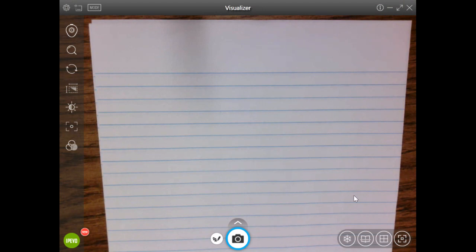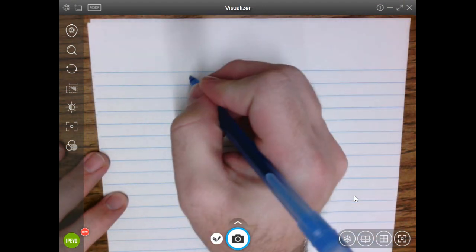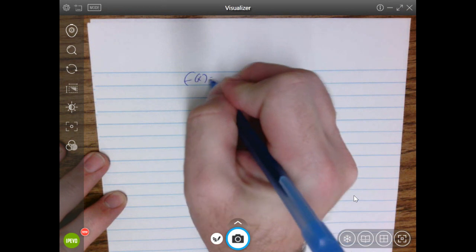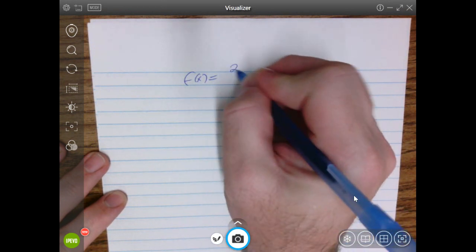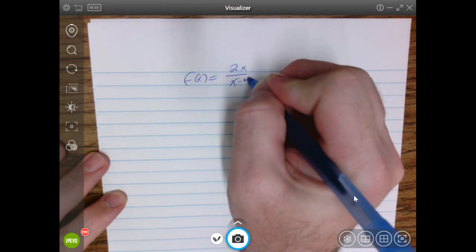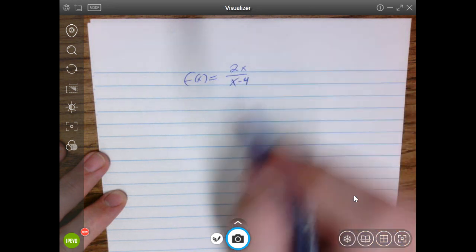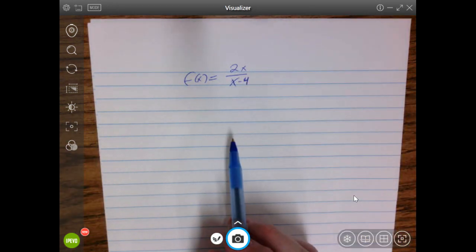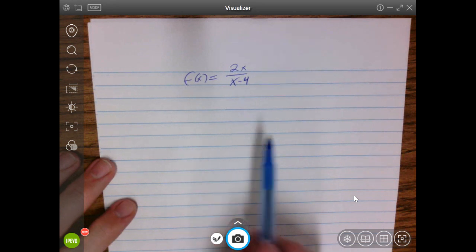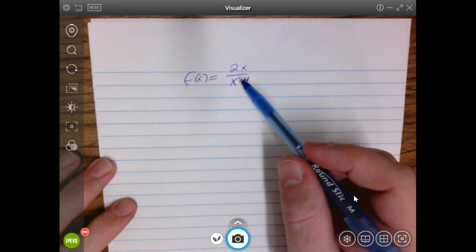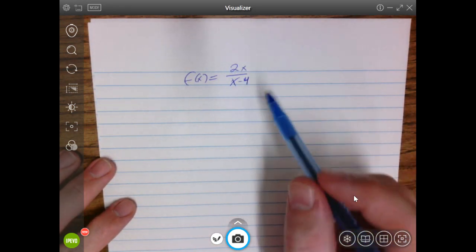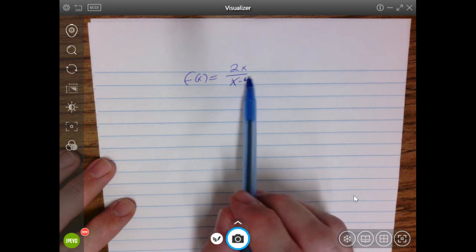So the idea here is, suppose you have some kind of equation like this, where you have a numerator and a denominator, and your first instincts are to look at what's the domain, right? You're trying to figure out, if you're trying to graph these things,